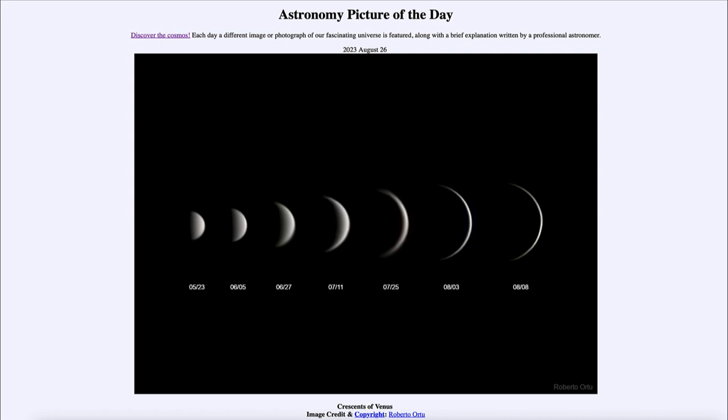That is apod.nasa.gov/apod. Today's picture for August 26th, 2023 is titled Crescents of Venus. What do we see here? We see seven pictures of Venus taken over the last couple of months. You'll notice that it looks like our moon in that it shows different phases. We can see a quarter phase on the left on May 23rd.